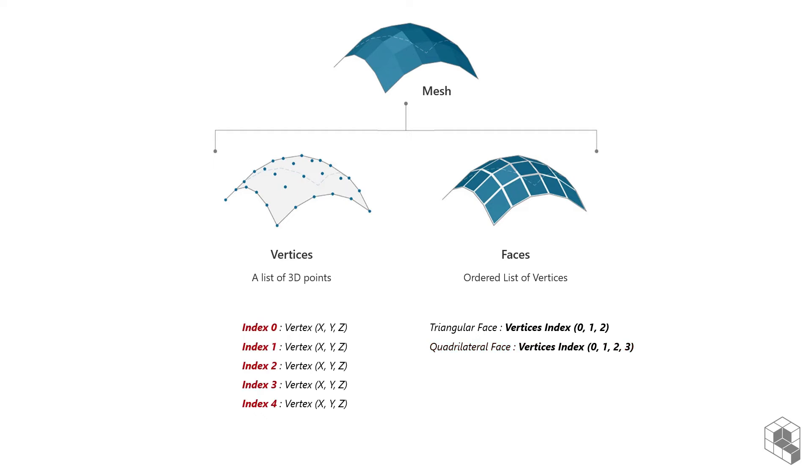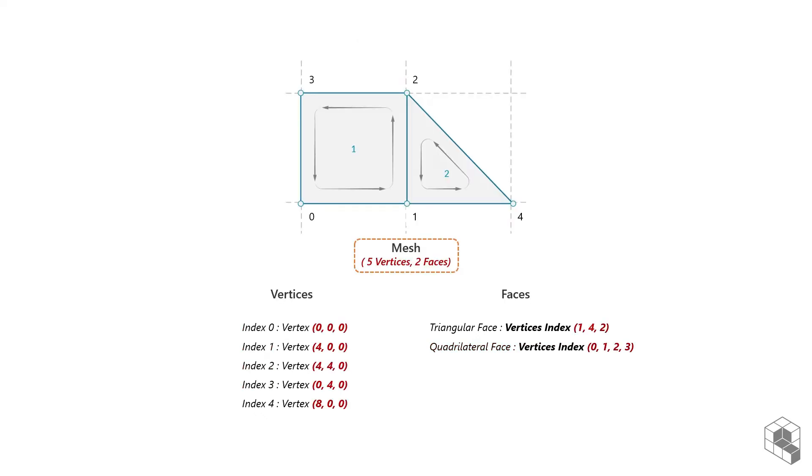Take the example on the screen. The mesh contains a list of two faces and a list of five vertices. Three vertices represent the first face, and four vertices represent the second face.